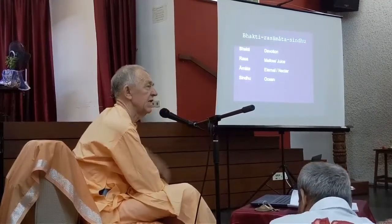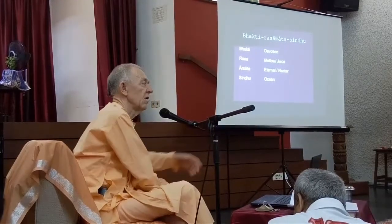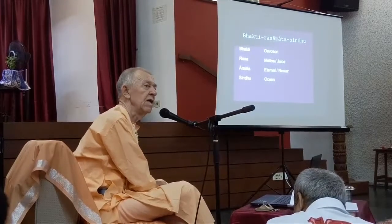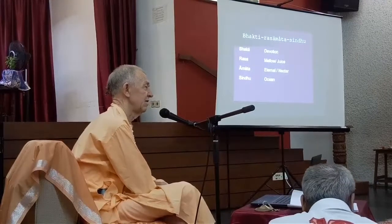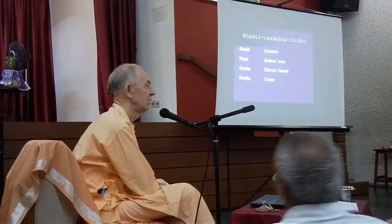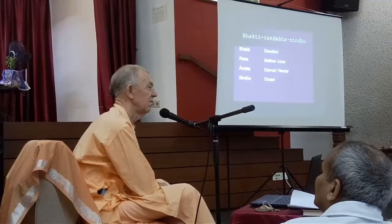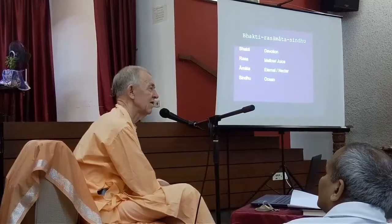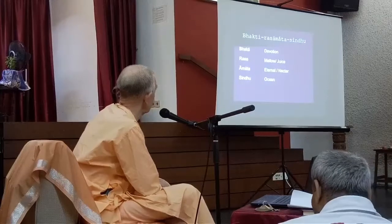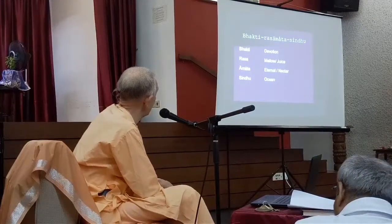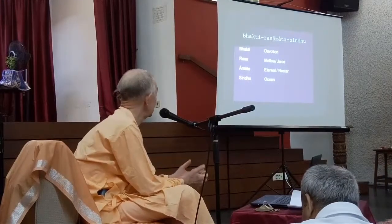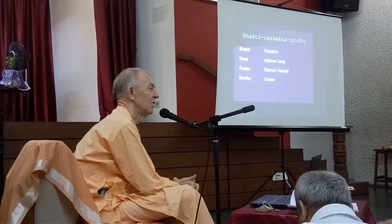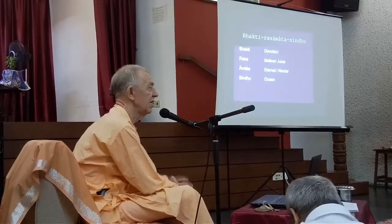These are different rasas which are there in the material world. But this book, Bhakti Rasamrita Sindhu, is describing a special rasa. While these material rasas exist, they are not eternal. Just like the family — we come together for some time, but then we're separated; we don't stay together forever. Our country also: we take birth in one country, then go and live in another. These relationships are very temporary. But Rupa Goswami, the author, is describing a special rasa which is Amrita — meaning nectar or something which is eternal, which never ends. Both meanings are applicable in this case.